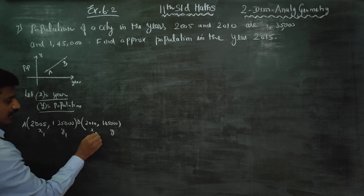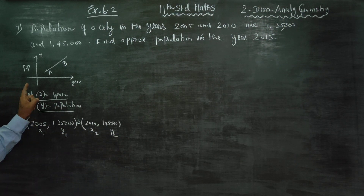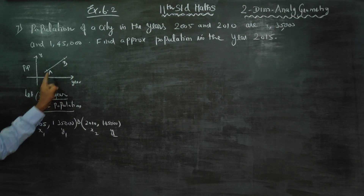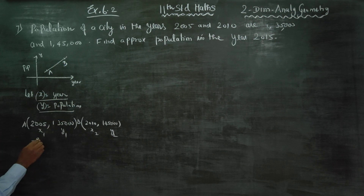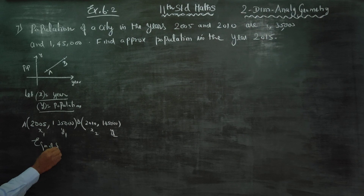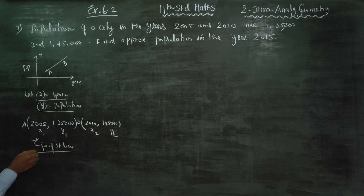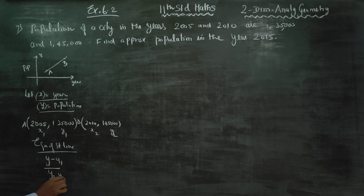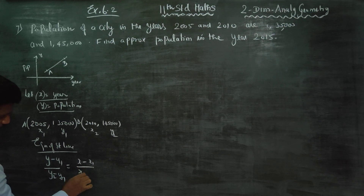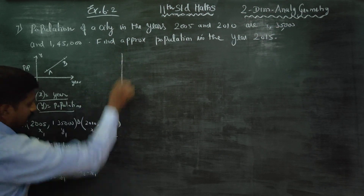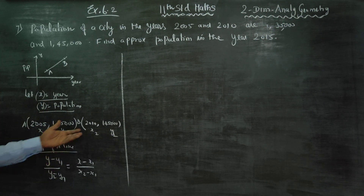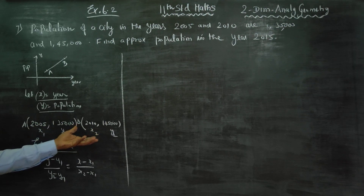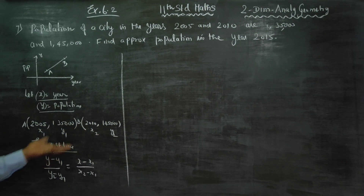I am going to find the equation of line AB, the equation of the straight line. The formula goes like this — the two-point formula: (y - y1) / (y2 - y1) = (x - x1) / (x2 - x1). Here the first point gives x1, y1 and the second point gives x2, y2.